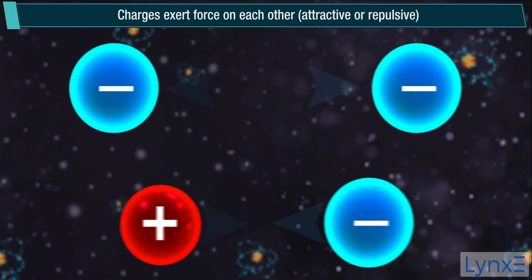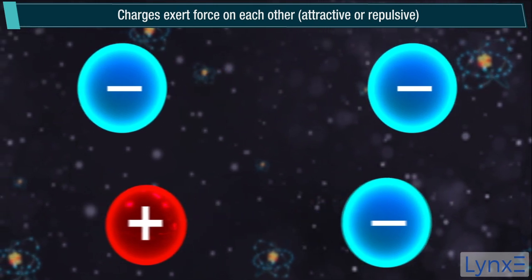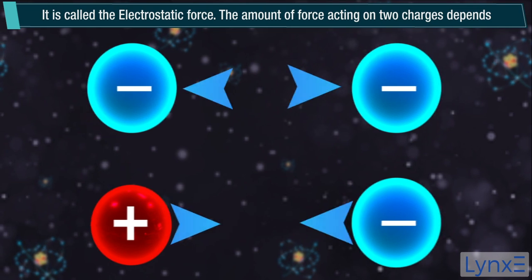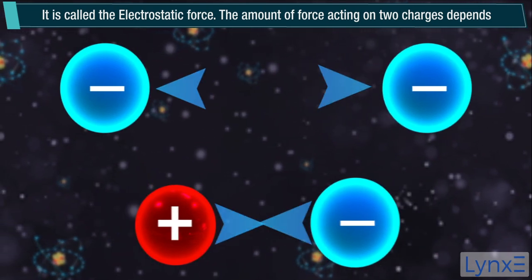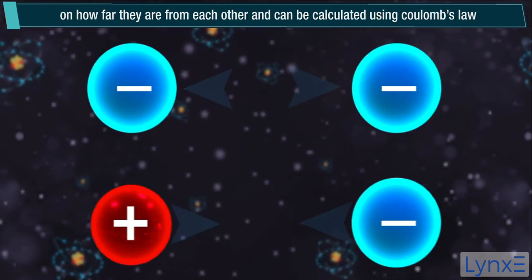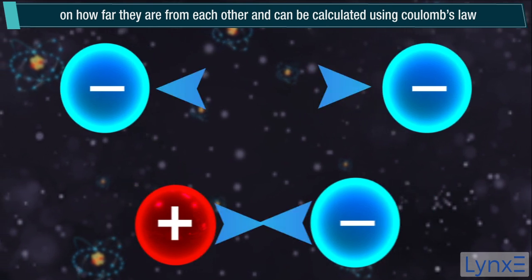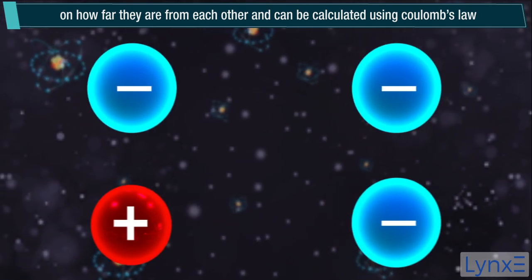Charges exert force on each other, attractive or repulsive. It is called the electrostatic force. The amount of force acting on two charges depends on how far they are from each other and can be calculated using Coulomb's law.